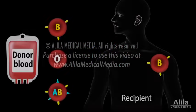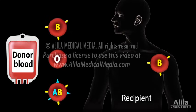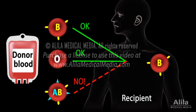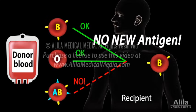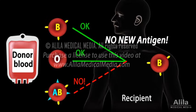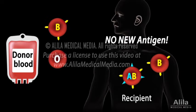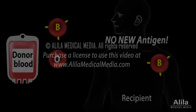Blood typing is critical for blood transfusion, as there are very specific ways in which blood types must be matched between the donor and recipient for a safe transfusion. The rule is simple: patients should not be given antigens that their own blood does not have. This is because the recipient's immune system may recognize any new antigen as foreign and develop antibodies to target it for destruction. Depending on the scale of the triggered immune response, the reaction can be serious or fatal.